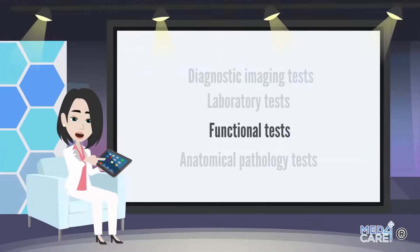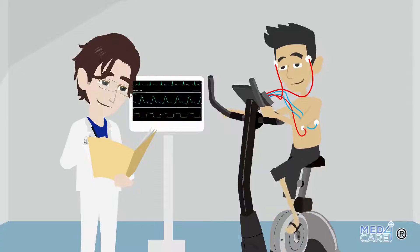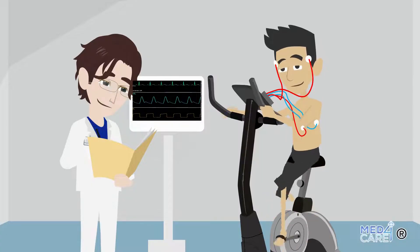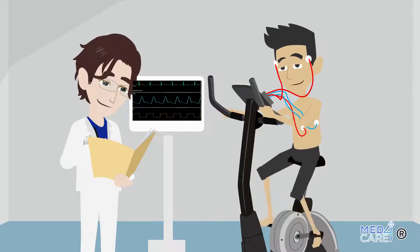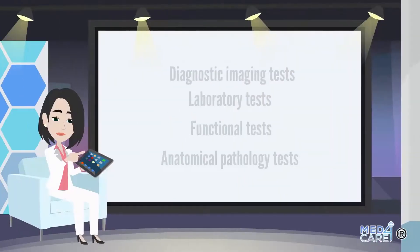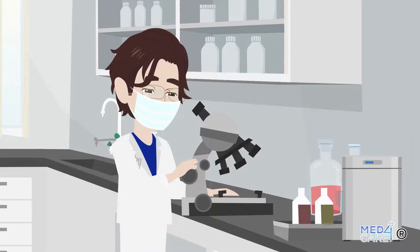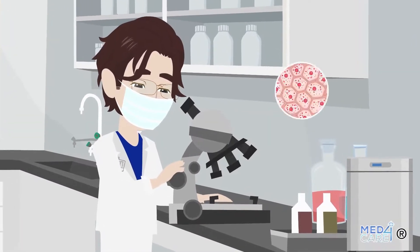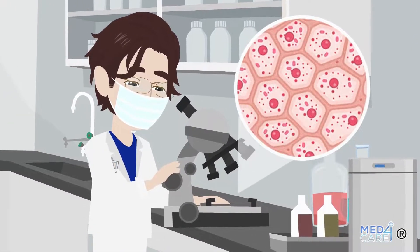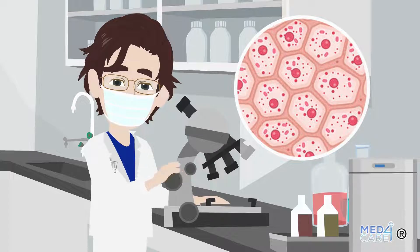The third category is that of functional diagnostic tests that verify the correct functioning and effectiveness of an organ or apparatus. Finally, a further diagnostic branch is represented by pathological anatomy, which deals with analyzing tissue samples taken from patients in order to identify the typical lesions of the various pathologies.